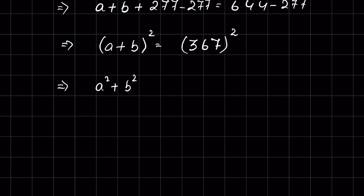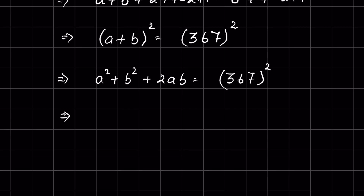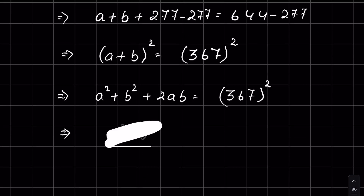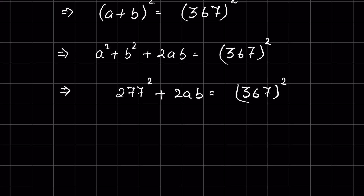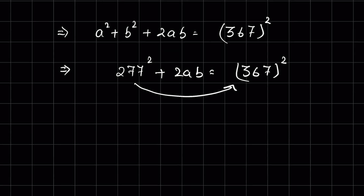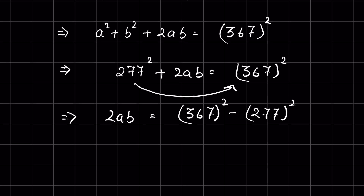The value of a squared plus b squared from equation one is 277 squared, so 277 squared plus 2ab equals 367 squared. Rearranging, 2ab equals 367 squared minus 277 squared.